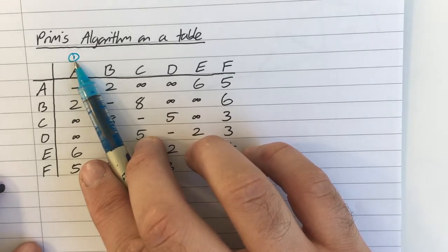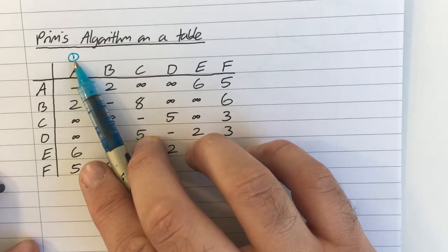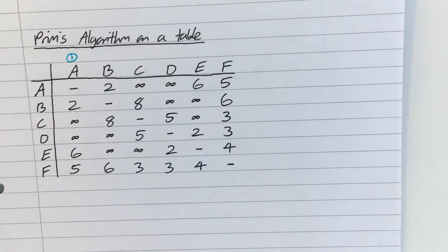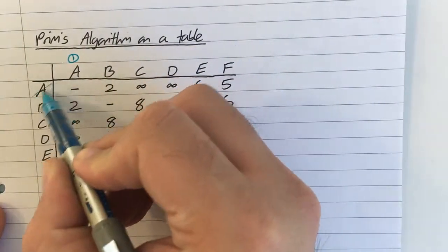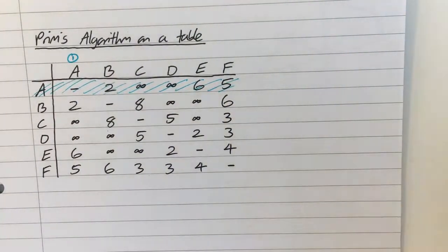Now, as my tree grows, what I don't want to do is choose an arc which takes me back to A. I don't want to do that, because that's going to create a cycle. So, to represent that on the table, I'm going to cross out row A, so that I don't go back to it.